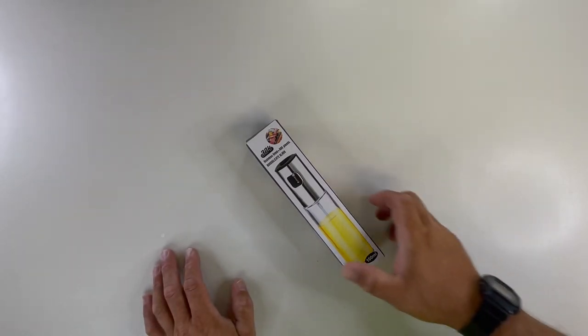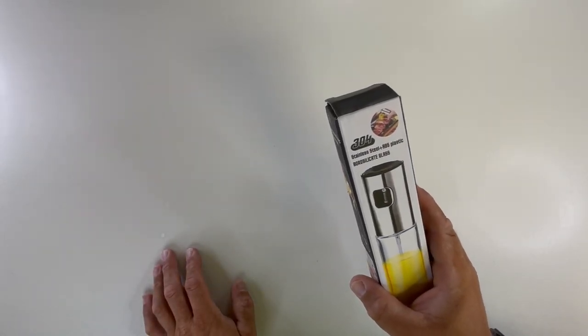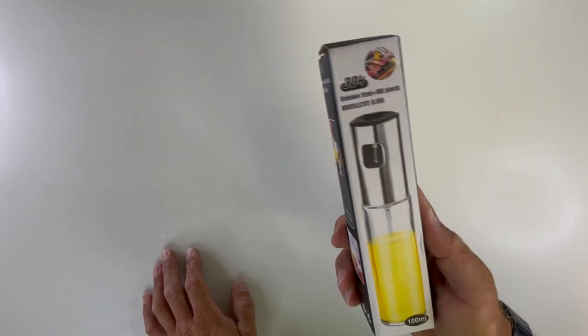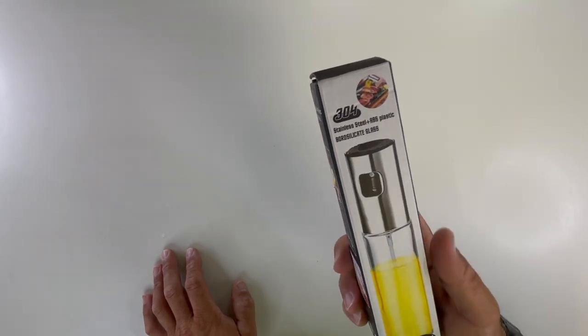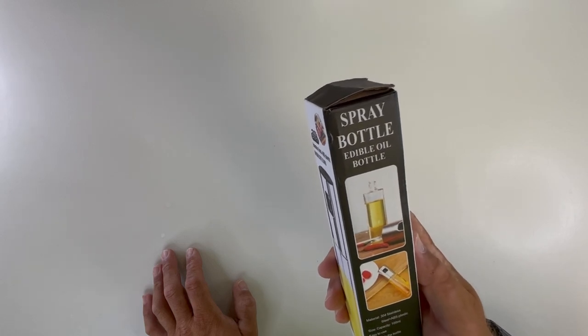Oh man, what is this? It's the 304 stainless steel ABS plastic borosilicate glass. 100 milliliters. I don't know what it does. Oh, there it is. It's a spray bottle. Edible oil bottle.